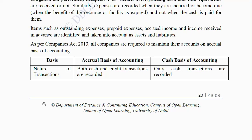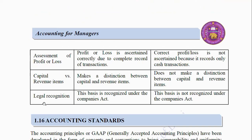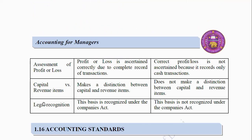Differences between Accrual Basis and Cash Basis: (1) On the basis of nature of transaction: In accrual basis, both cash and credit transactions are recorded; in cash basis, only cash transactions are recorded. (2) On the basis of assessment of profit: In accrual basis, profit or loss is ascertained correctly due to complete record of transactions; in cash basis, correct profit or loss is not ascertained because it records only cash transactions. (3) On the basis of capital vs. revenue items: Accrual basis makes a clear distinction between capital and revenue items; cash basis does not. (4) On the basis of legal recognition: Accrual basis is recognized under the Companies Act; cash basis is not.